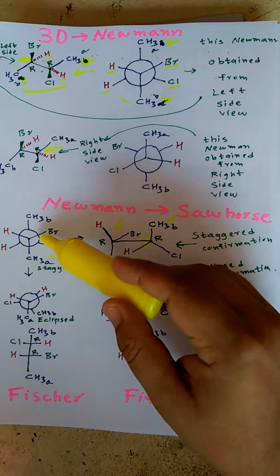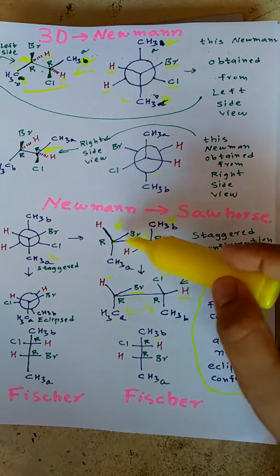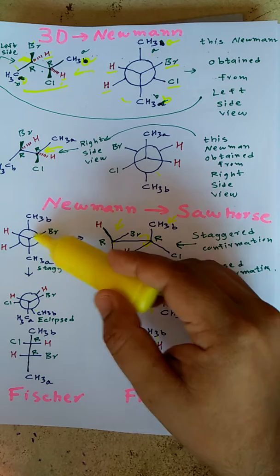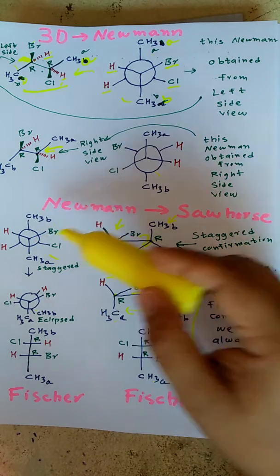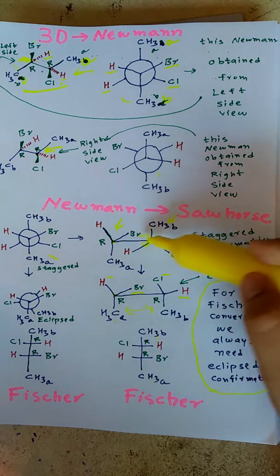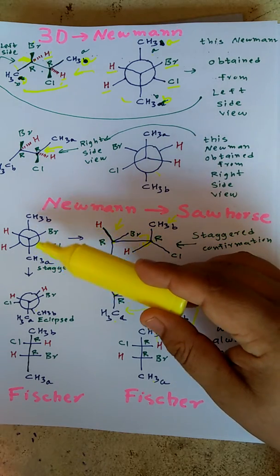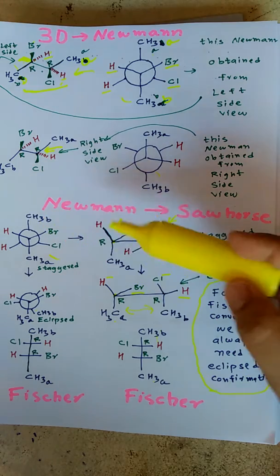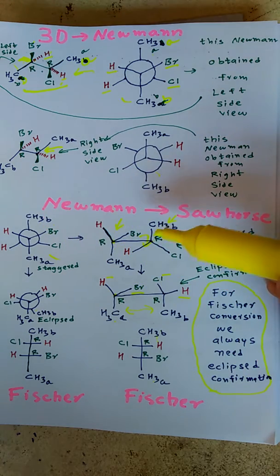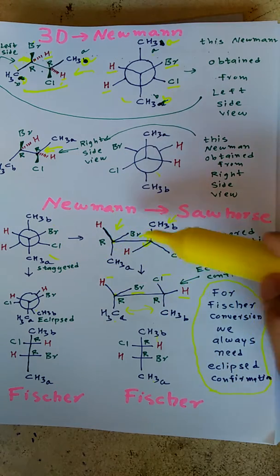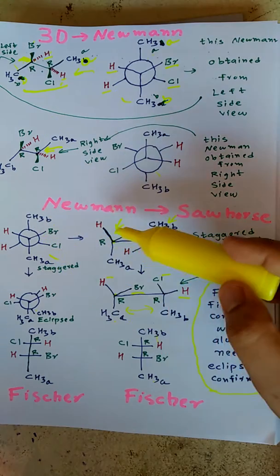Now see how we have converted this into this. This is the normal Y as we are writing, and the back side is an inverted Y — that same thing we are projecting here. See this is the normal Y and this is inverted Y. Methyl below, methyl above in the plane — chlorine and bromine are on my right side, and both hydrogens are on my left side.